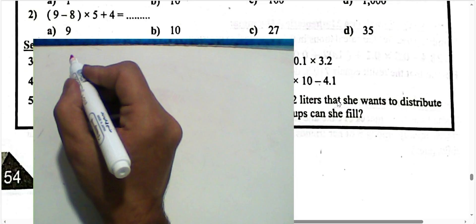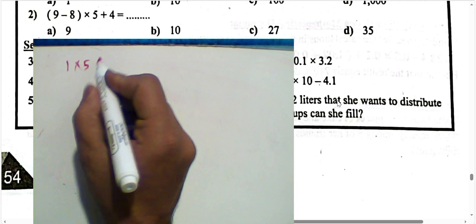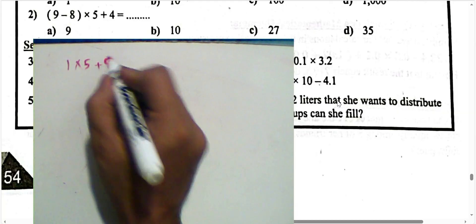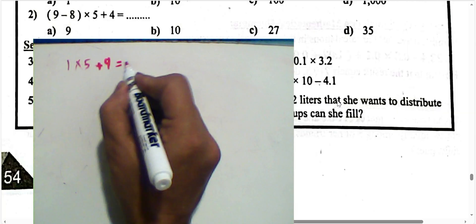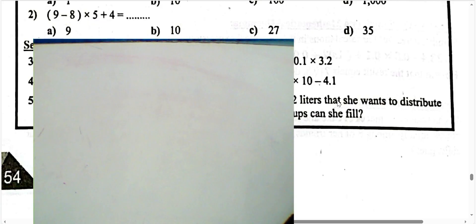Next question: 9 subtract 8 equals 1; 1 subtract 5 plus 4 — 1 plus 5 times 5 gives 5 plus 4 equals 9. The result is 9.